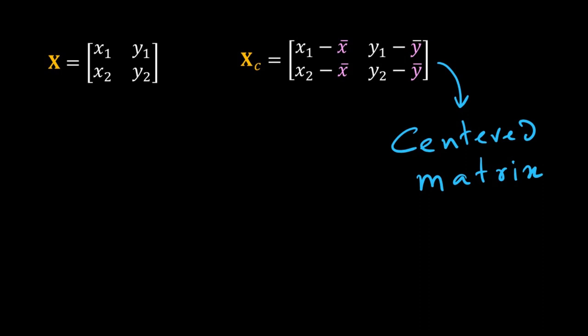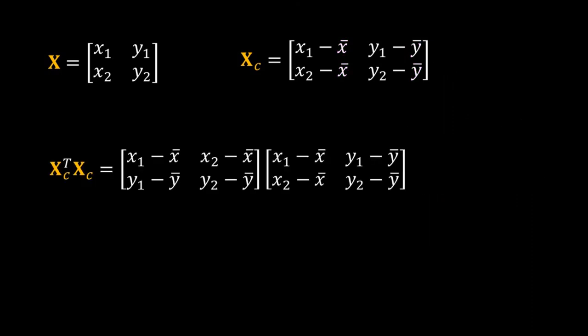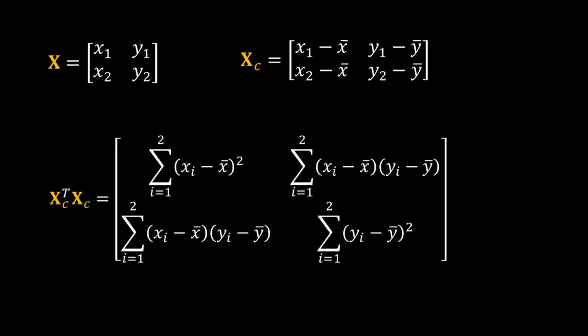We have standard tricks for matrix algebra to get this matrix. As this matrix is called a centered matrix I have used C in the subscript of X. I need a square of this centered value to calculate the variances. So I will multiply the transpose of XC with XC. Try this multiplication yourself. This will give us all the squared terms and summations.